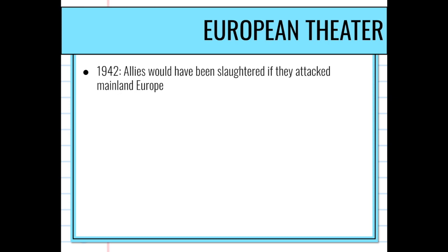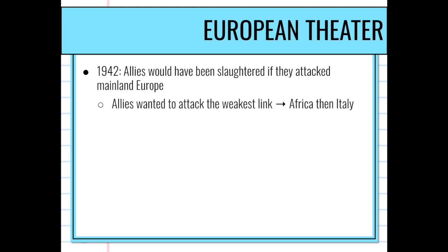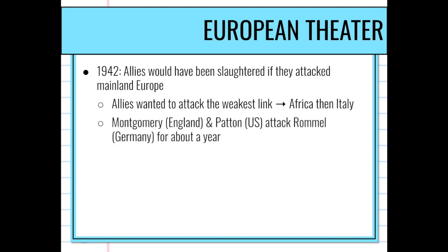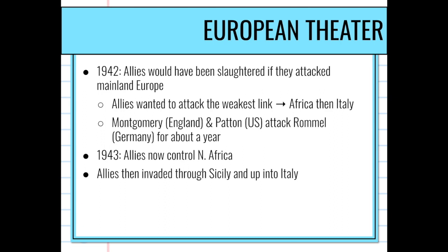In the European Theater, by 1942 the Allies realized that directly attacking mainland Europe through France would be catastrophic. Instead they look for the weakest link — North Africa, then Italy. General Montgomery from England and General Patton from the United States are sent to find Germany's General Rommel. The three chase each other around North Africa for about a year until the Allies are successful and gain control of North Africa.